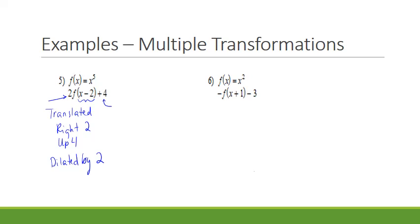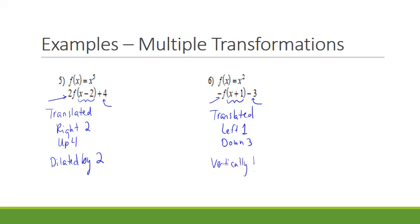For number 6, we look at the x first — so it's been translated left 1. Then we look at what's added to f of x — it's also been translated down 3. And then in front of f of x, we just have a negative, so it's also been vertically reflected.